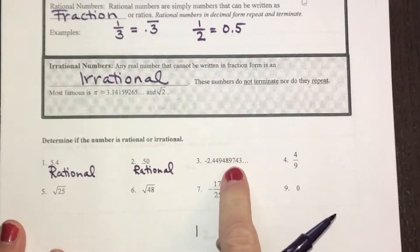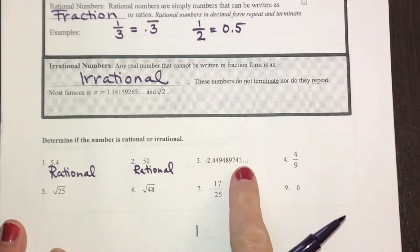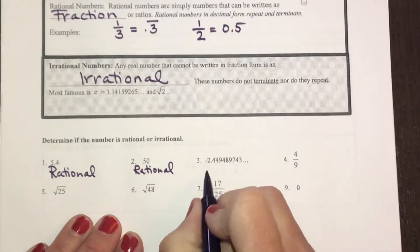My next decimal doesn't stop and it doesn't have a repeating pattern. That would be irrational.